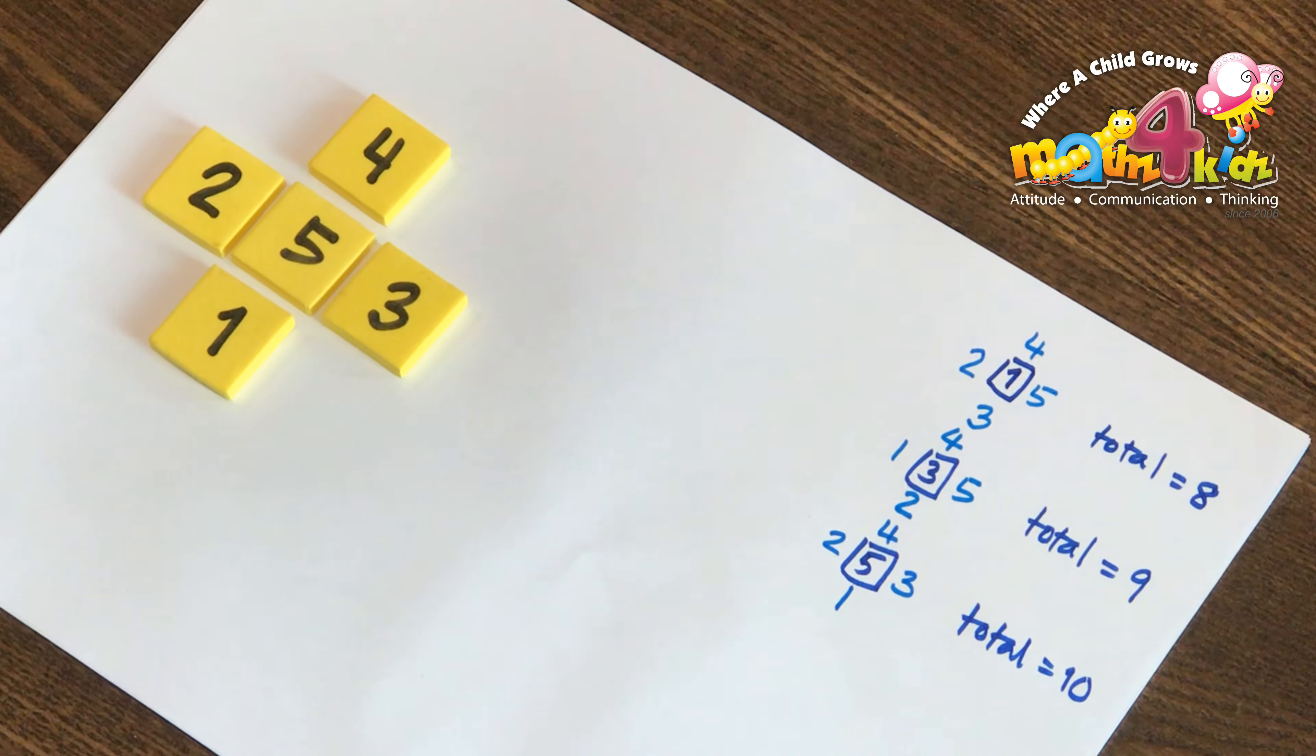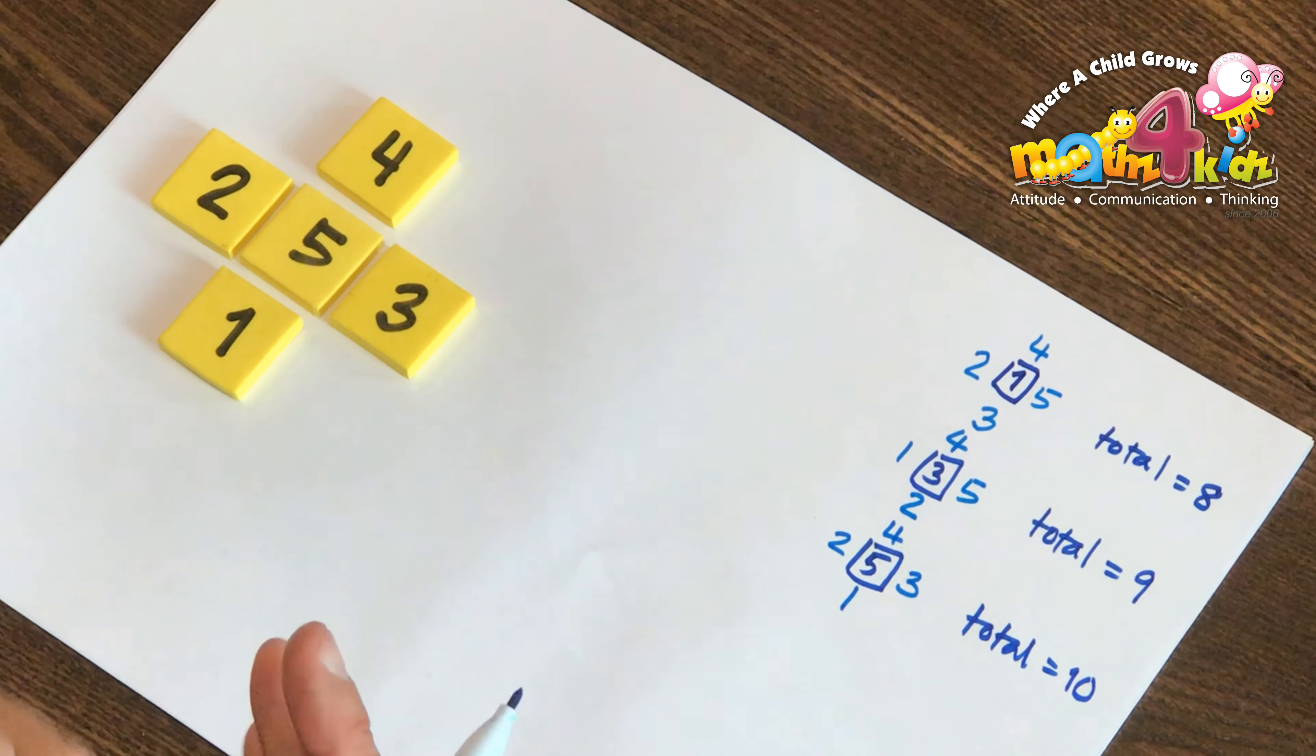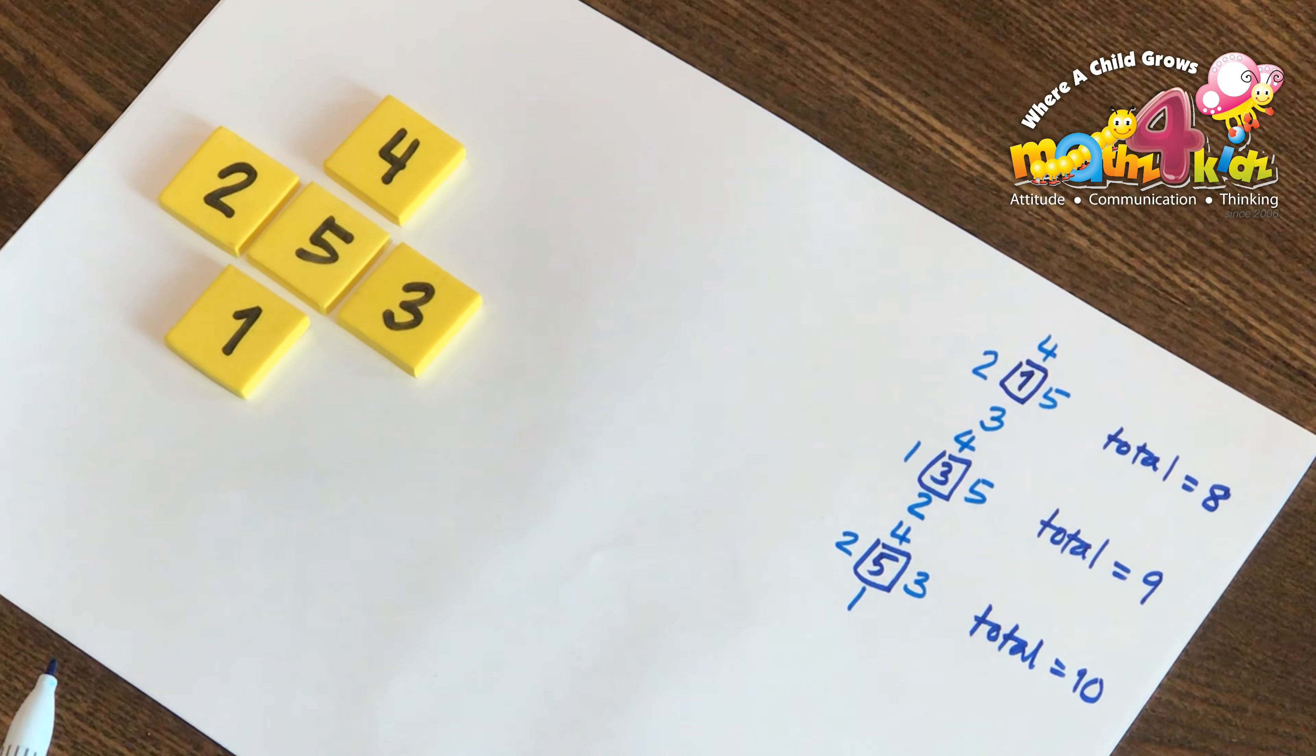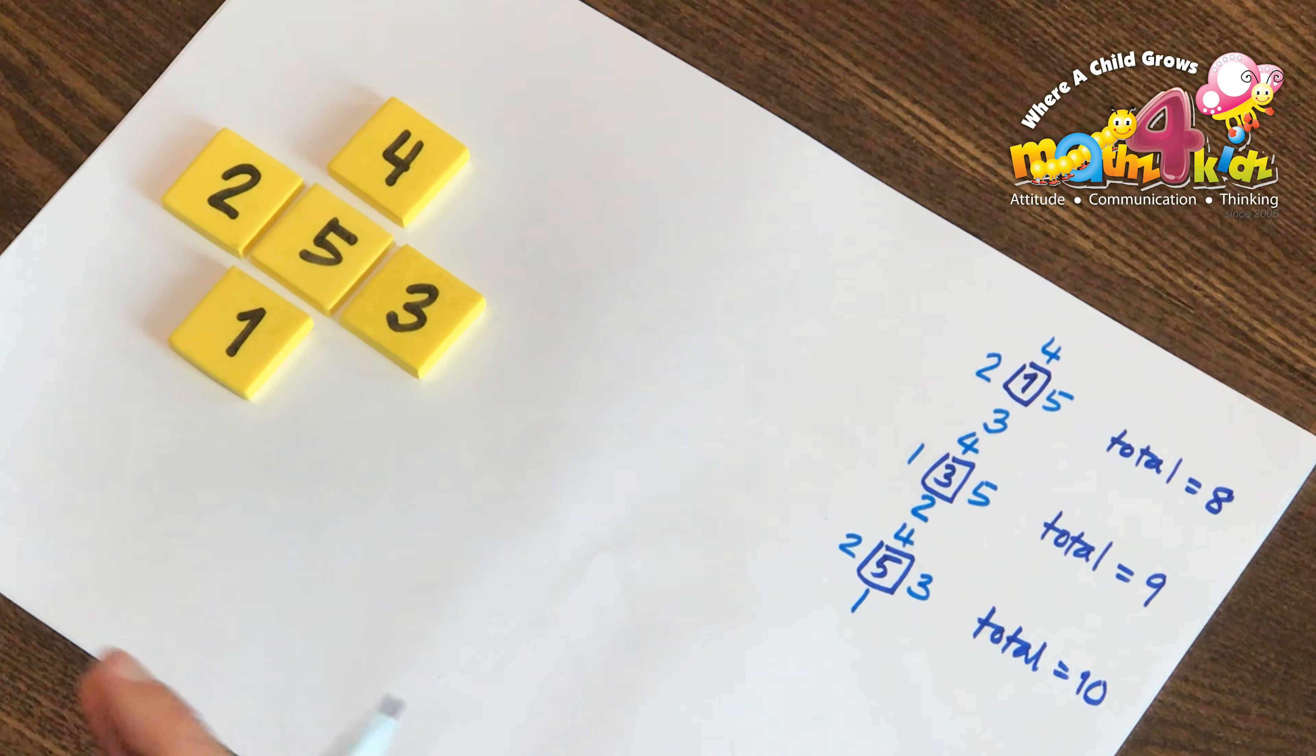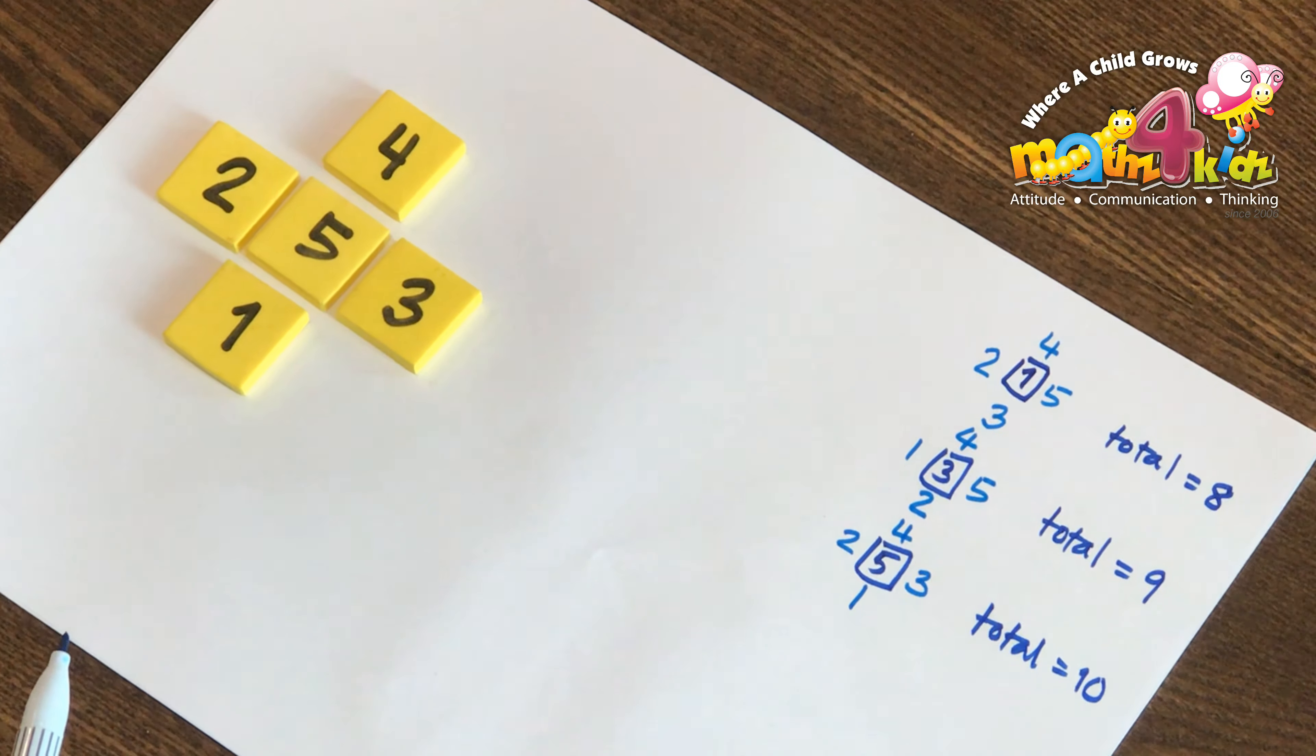Are there other possibilities? Why don't you try to figure out if there are other possibilities? And if not, are there interesting patterns that you're able to see?